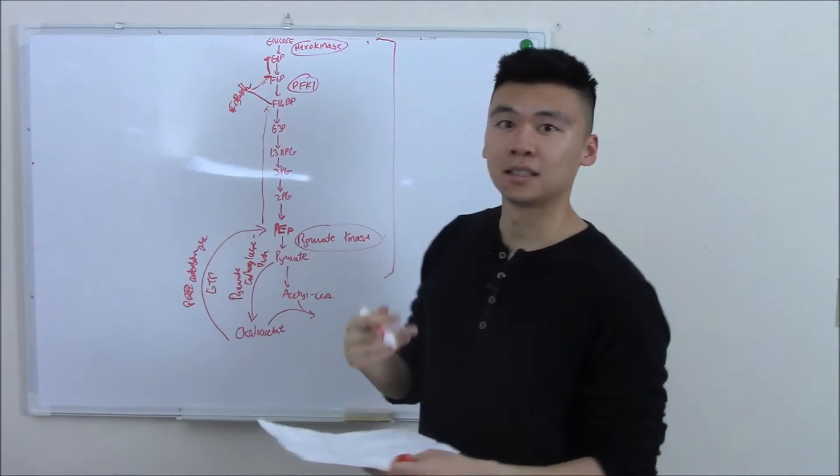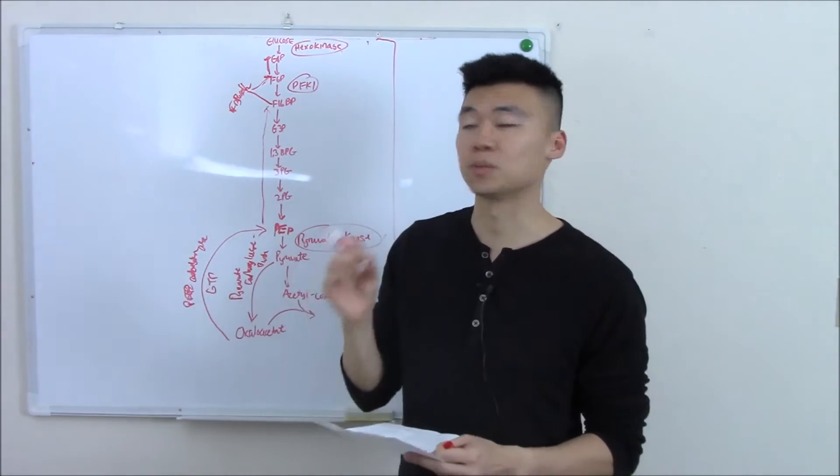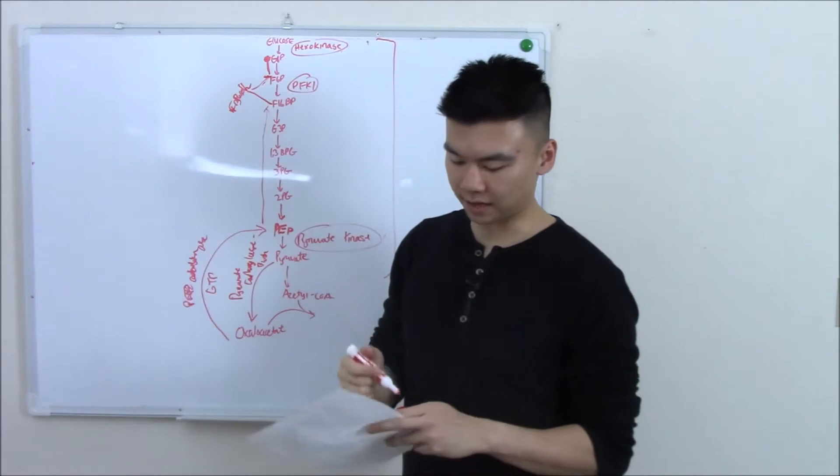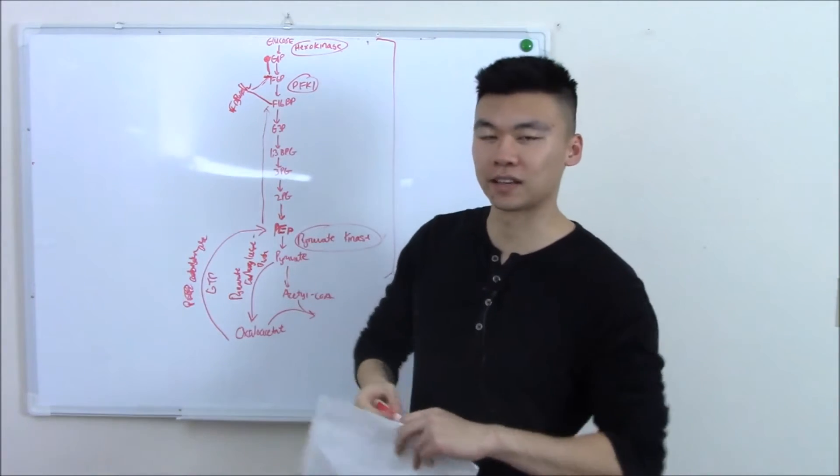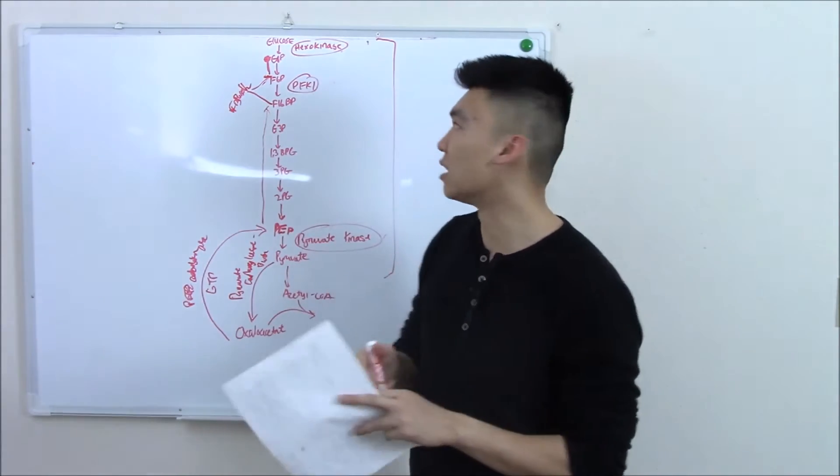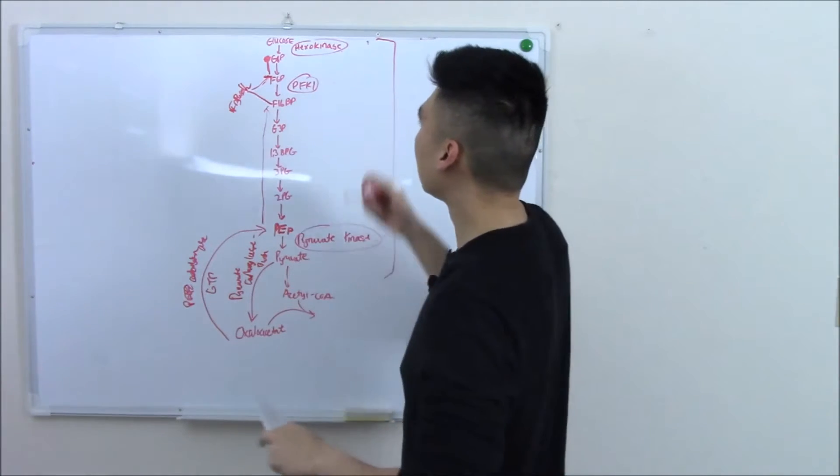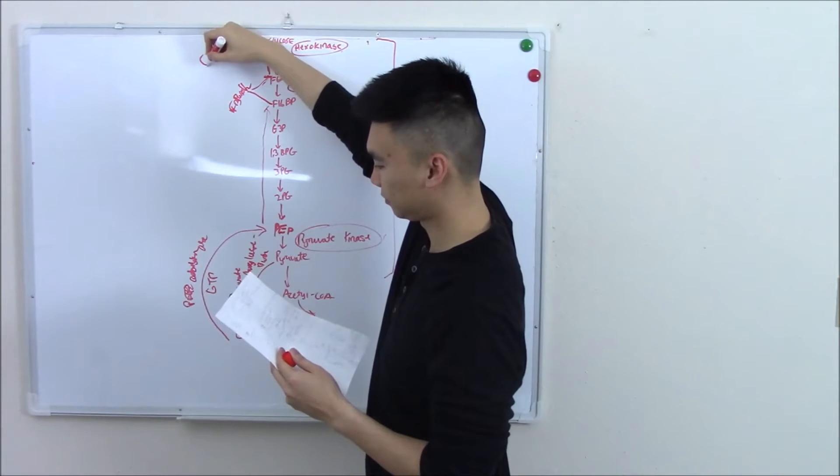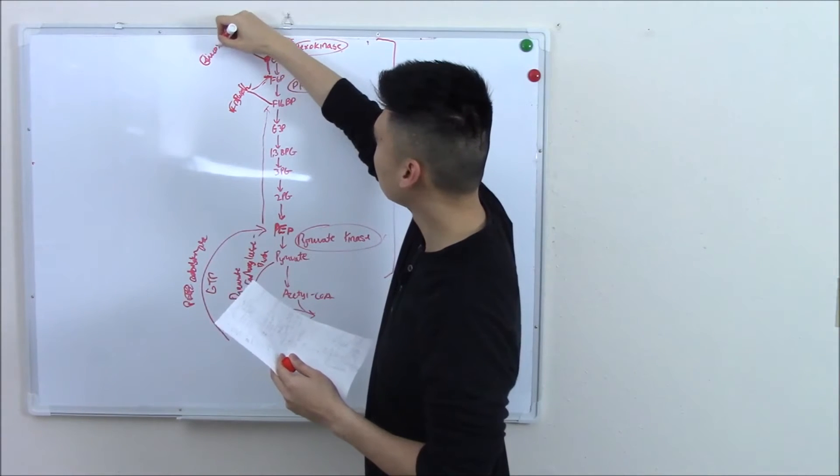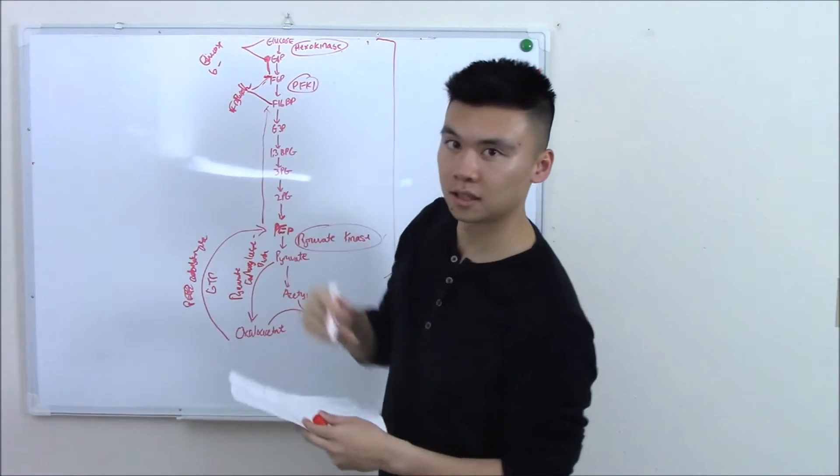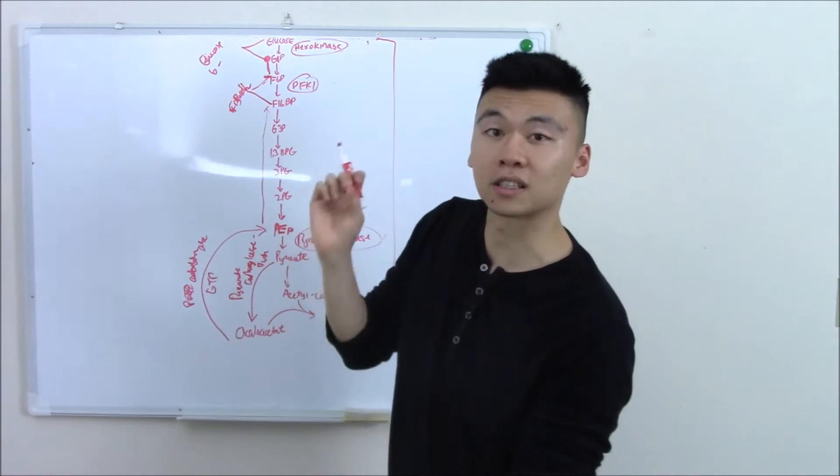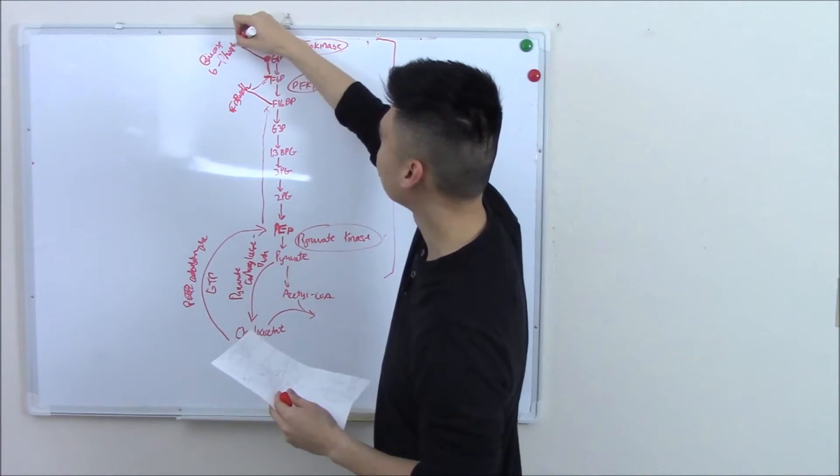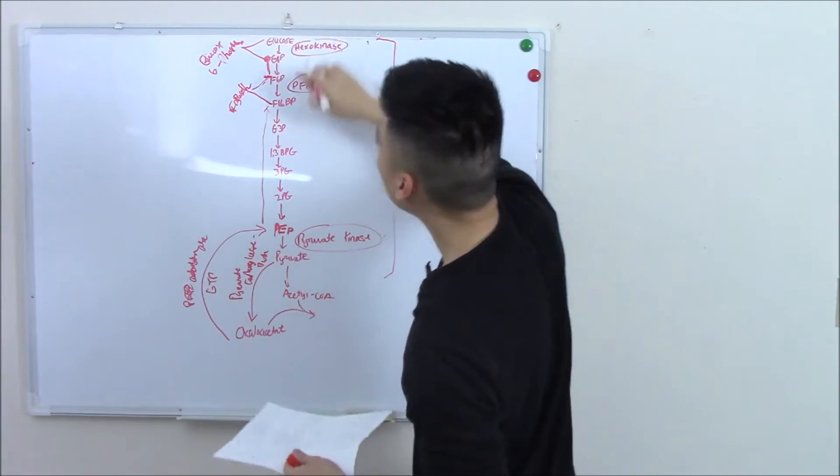Now it's making its way up and it gets to the last roadblock, the last irreversible step. It's stuck at glucose 6-phosphate and it needs to take that phosphate group off. Remember, phosphate traps it in there. It needs to take it off and it does that with the help of an enzyme called glucose 6-phosphatase.